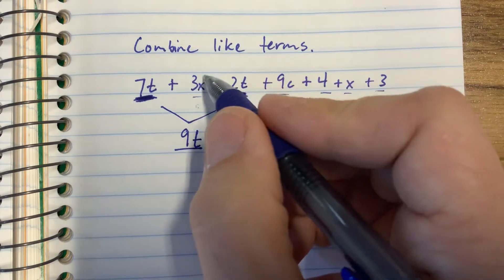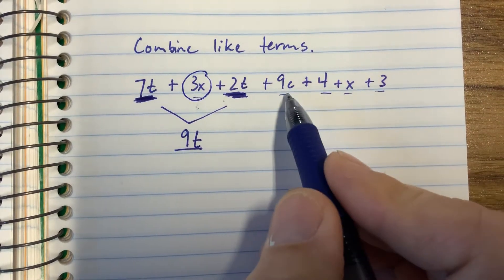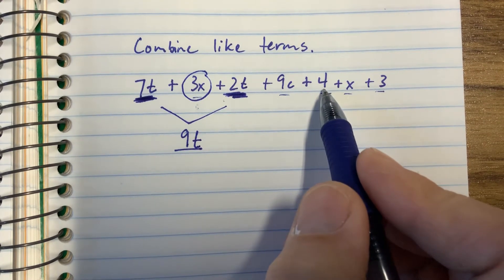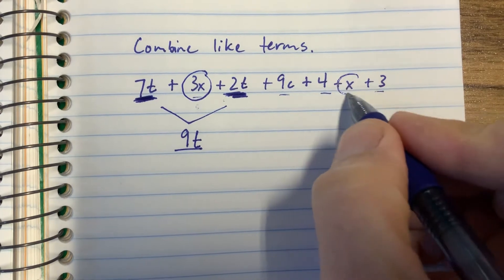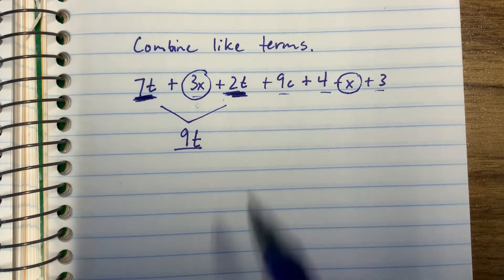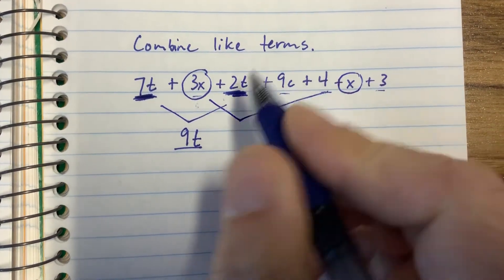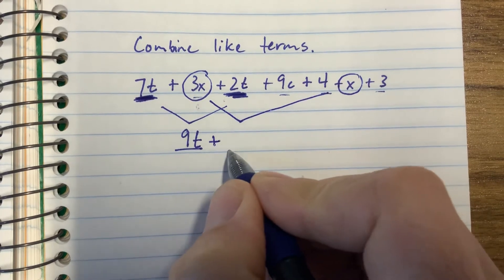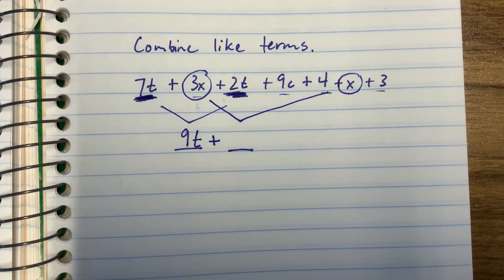Then I'm going to move over here to the 3x. 3x. 9 does not have an x. 4 doesn't have an x. Here has an x. x, how many x's is that? That's 1x. So 3x plus 1x, how many x's is that? You're going to write that there.